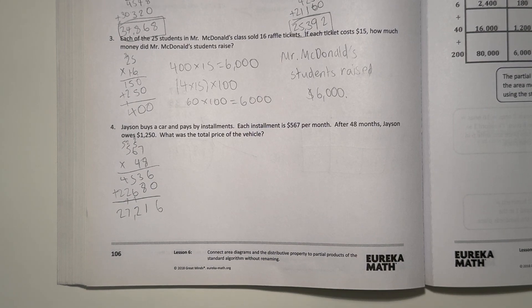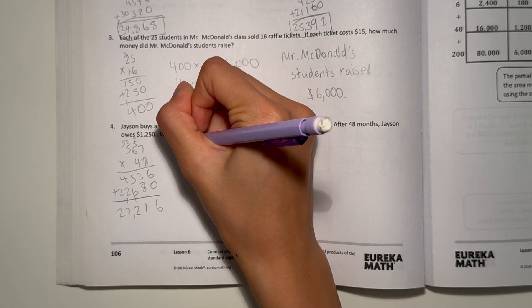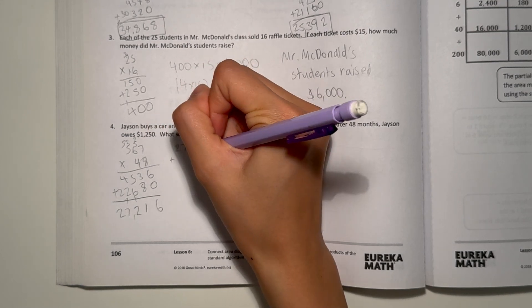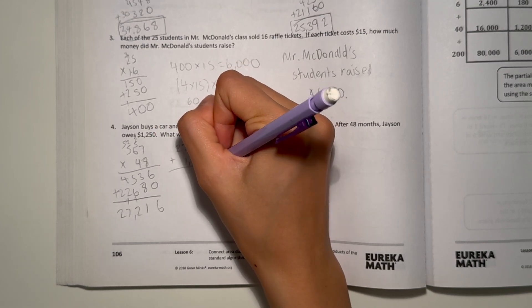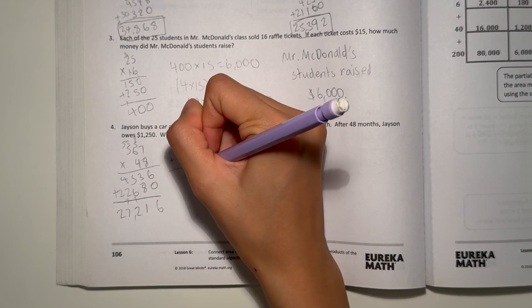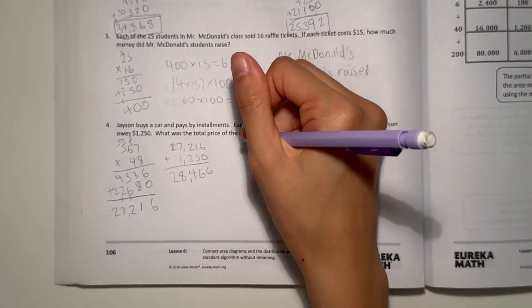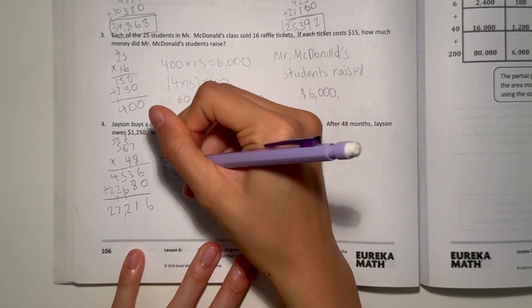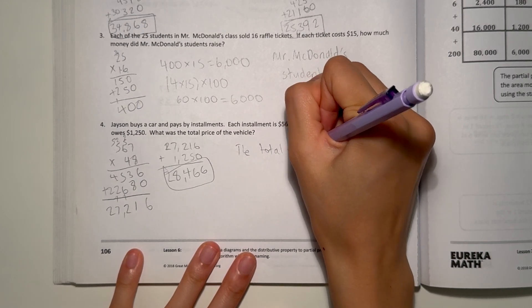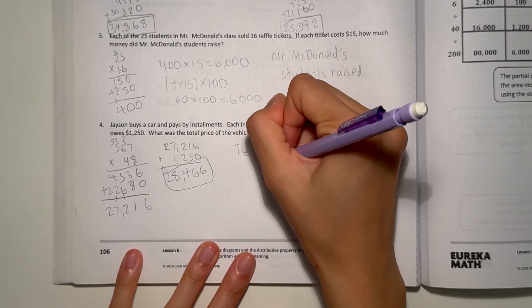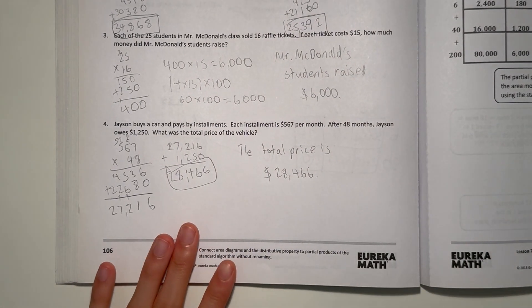But we're not done yet because Jason still owes 1,250. So 27,216 plus 1,250. That's 6, 6, 4, 8, 2, 28,466. That means the total price is $28,466. So yeah.